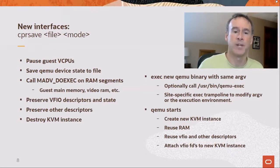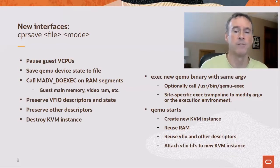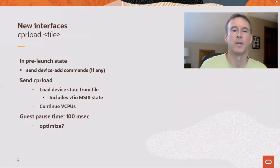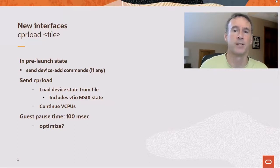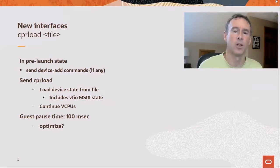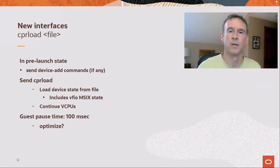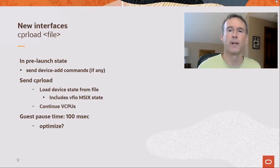New QEMU starts and creates a new KVM instance. It finds and reuses RAM segments, finds and reuses VFIO and other descriptors, and attaches VFIO to the new KVM instance. QEMU is now in the pre-launch state. The management layer now has the opportunity to send device add commands that supplement the devices defined by the argv. This is why update is divided into CPR save and CPR load phases. CPR load is fairly simple — it loads device state from the file and continues the vCPUs. The guest is running again, controlled by a new version of QEMU. The pause time is about 100 milliseconds on a four-year-old Xeon processor.